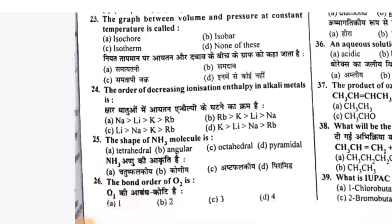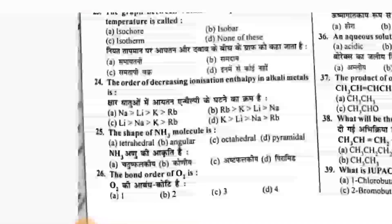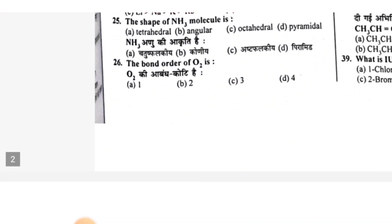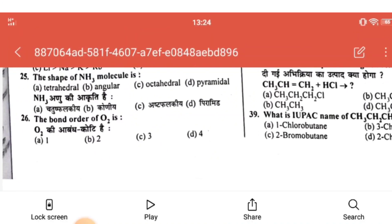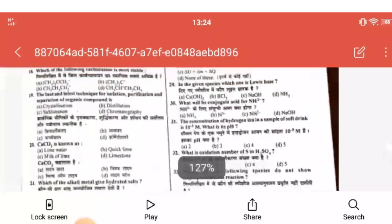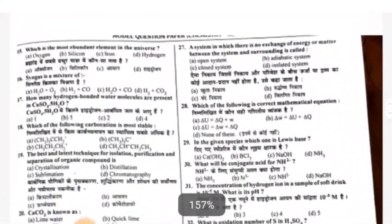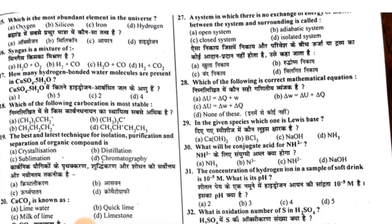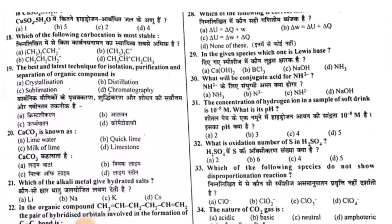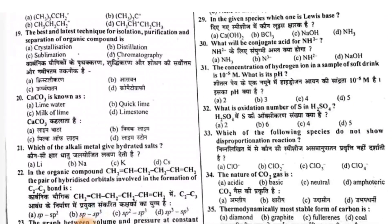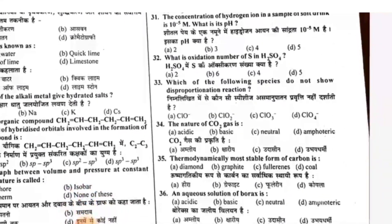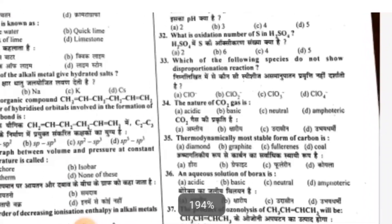Question 24 answer is A. Question 25 answer is pyramidal, D. Question 26 answer is B, that means 2. Question 27 is an isolated system, answer is D. Question 28 is D. Question 29 is D. Question 30 is A. Question 31 is D. Question 32 is B.